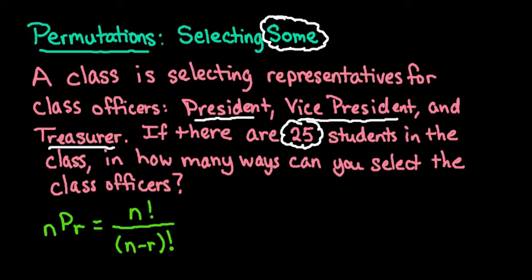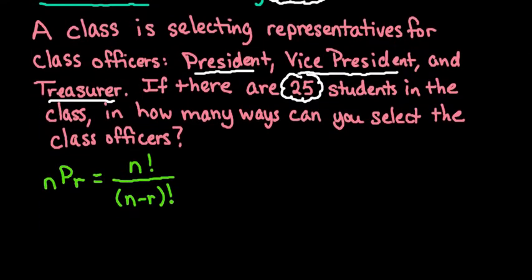I'm gonna say almost all scientific calculators and graphing calculators have nPr, this formula, already programmed into it. So if you do have that on your calculator you can use that. I will do videos that show how to use the TI-84 and the TI Nspire graphing calculators for this. But this formula is programmed into most scientific calculators.